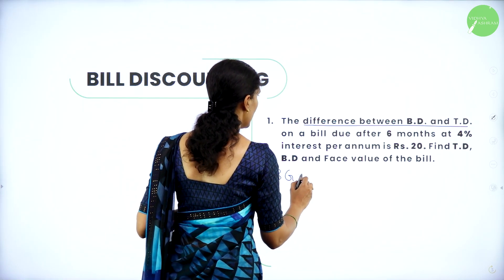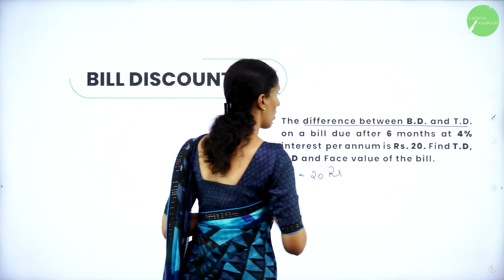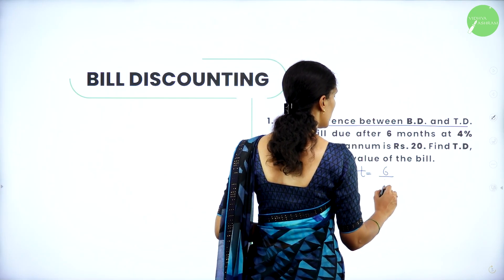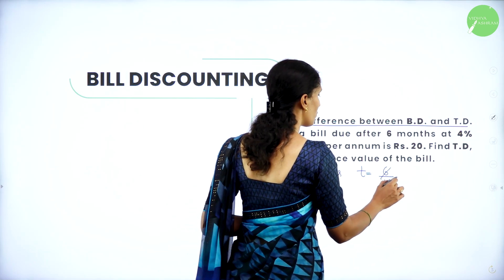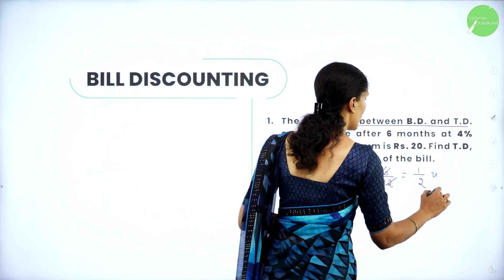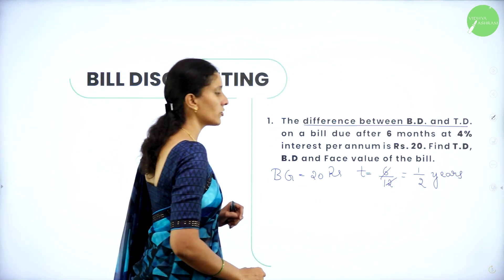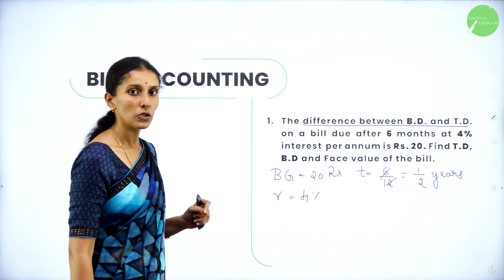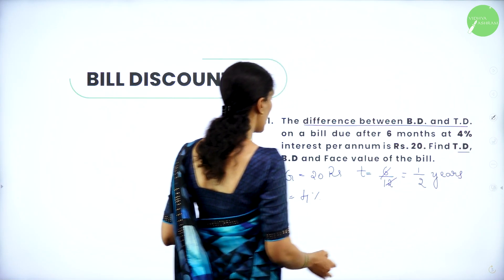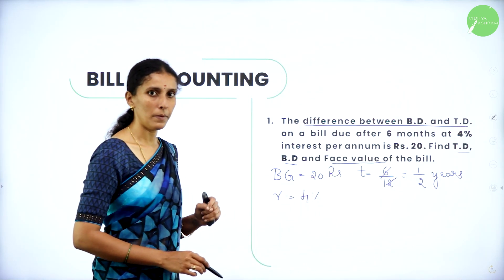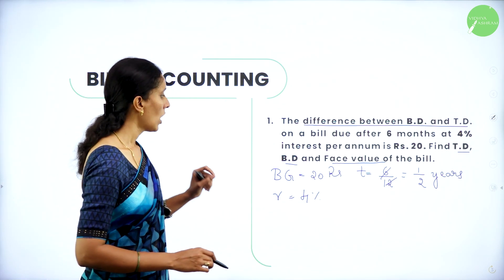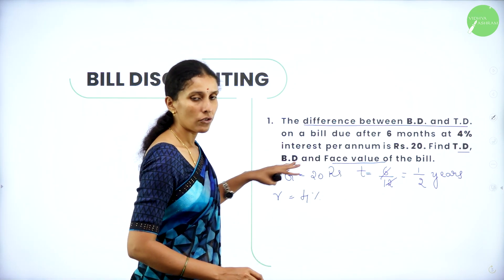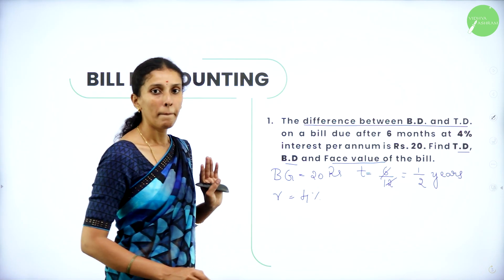Given banker's gain is Rs. 20. The time is given — 6 months. When you convert it into years, it is 6 by 12, which we can write as 1 by 2 years. Rate of interest R is equal to 4%. What I am supposed to calculate: I have to calculate true discount, banker's discount and face value of the bill. Time and rate of interest is given along with banker's gain.